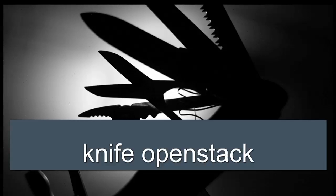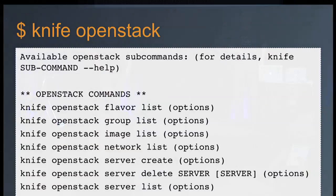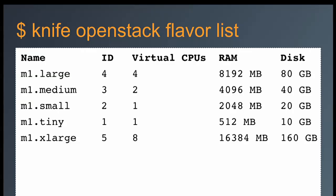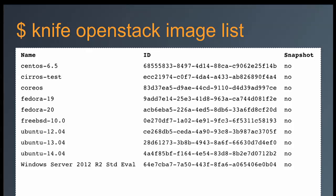Knife is the tool we use for integrating Chef with different APIs — it's our command line tool, and Knife OpenStack is the one we use to talk to OpenStack. Knife OpenStack allows you to deploy Chef infrastructure into OpenStack. It has commands for flavors, groups, images, networks, and servers. If you say flavor list it gives you names, IDs, and specs. Image list gives names, IDs, and whether it's a snapshot. If you're using Neutron, you can list networks available to connect to, and list security groups.